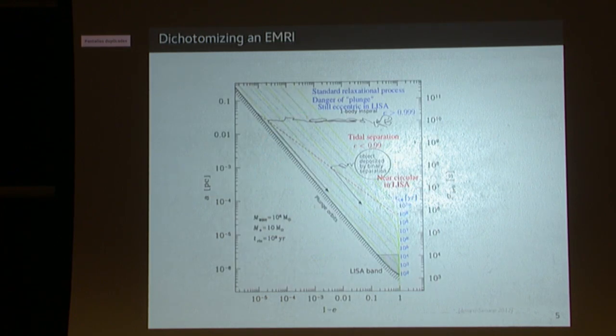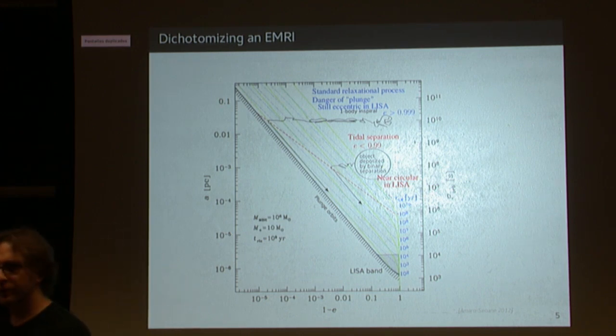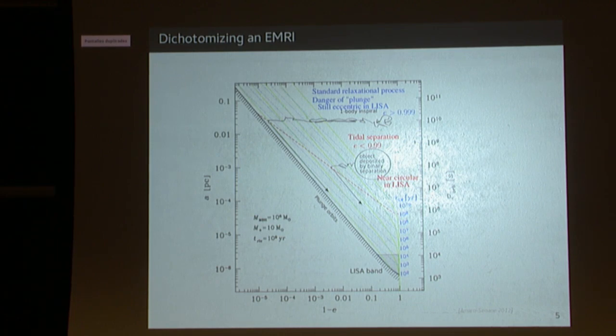We're talking about the binary. We have a semi-major axis and an eccentricity here. This is the last stable orbit. Anything to the left of that, we can see. On the right, we have two different regimes. In a kind of random walk-like fashion, a compact object is trying to move towards higher eccentricities until it crosses this red line.